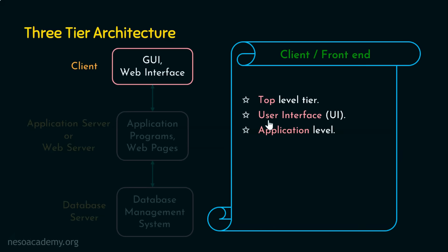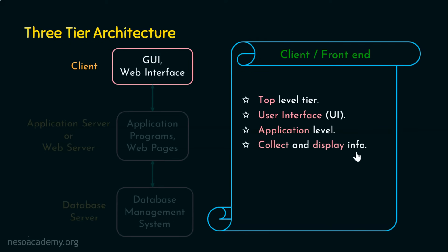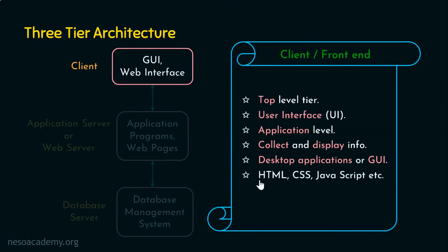The presentation tier or client tier interacts with the next tier — the application tier — where business logic is implemented. This user interface collects and displays information. For example, your account balance is displayed on the presentation screen, whether on a mobile screen or web interface. When doing a fund transfer, you provide information like the amount and destination account. So the presentation tier not only displays data but also collects it. Technologies used include HTML, CSS, JavaScript, etc.